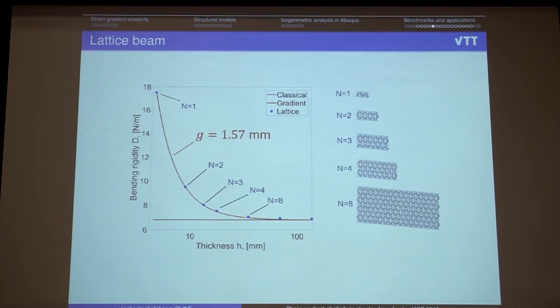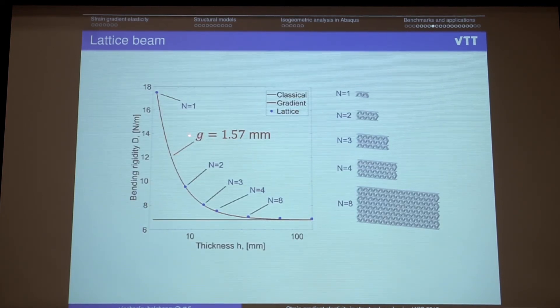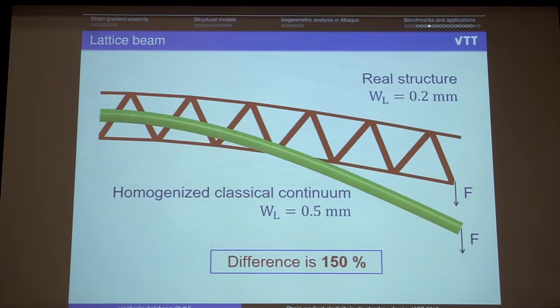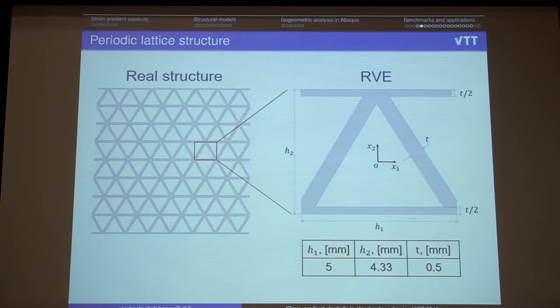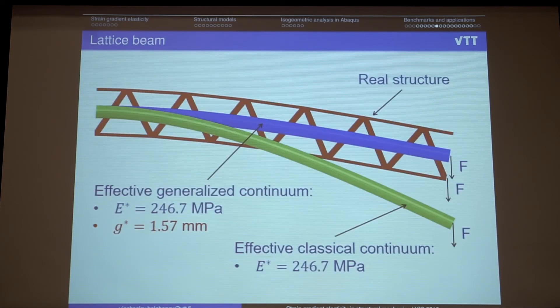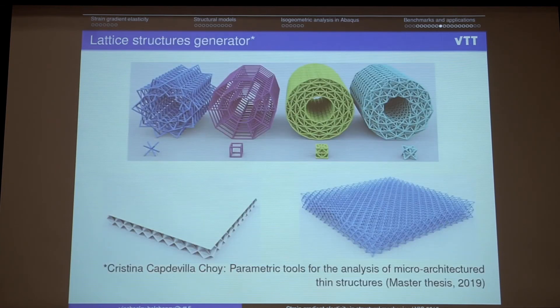And then we can define the G parameter, which is a strain gradient elasticity parameter, for this certain kind of RVE. And then use it for any kind of geometry to explain the mechanical behavior or elastic behavior of the structure.